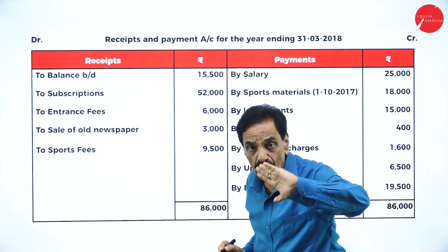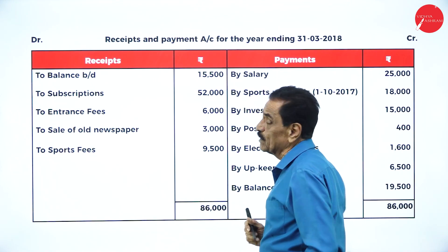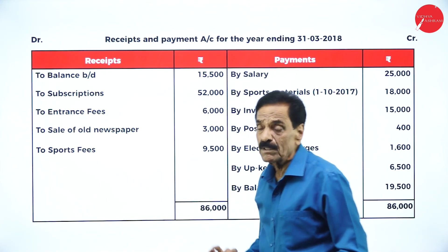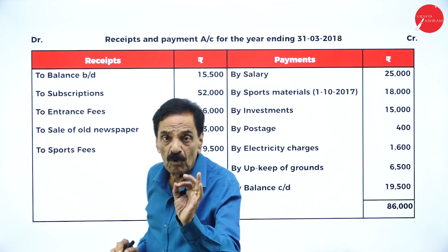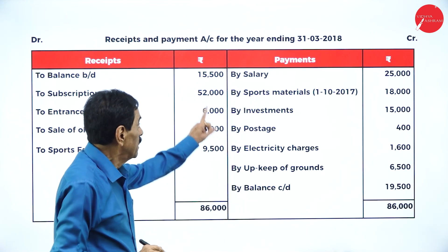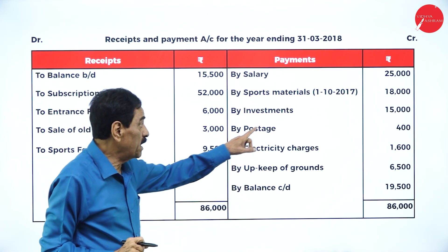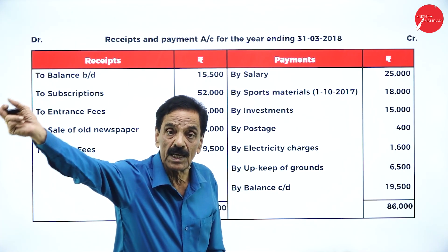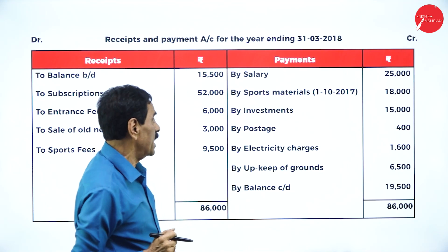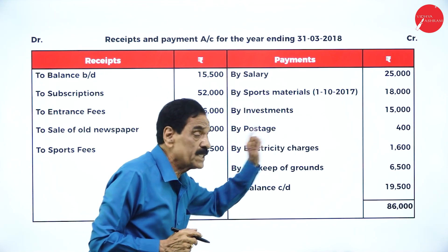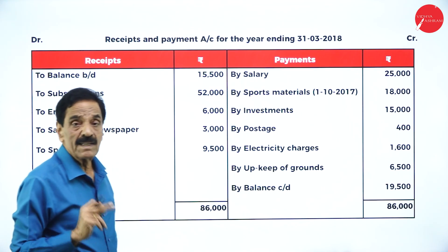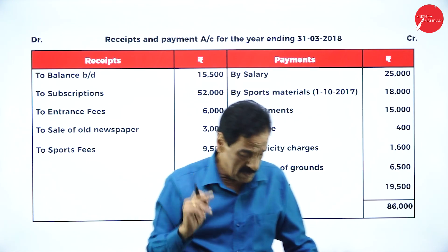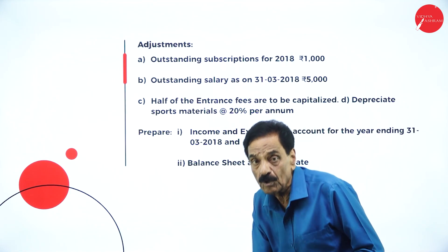Do not take opening balance or closing balance — both are real accounts. Subscription is income, entrance fees is income, sale of old newspapers is income, sports fees is income, salary is expenditure. Sports material purchased on 1/10, and as on 31st March 2018, the 18,000 worth is an asset. Investment is an asset. Postage, electricity charges, and upkeep of ground are expenditures. Outstanding subscription of the current year should be added.